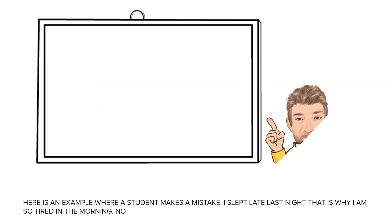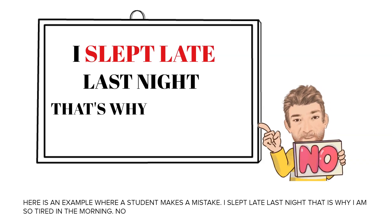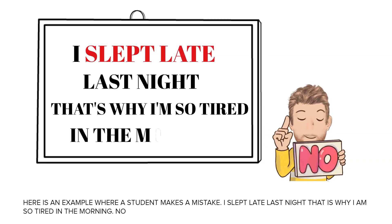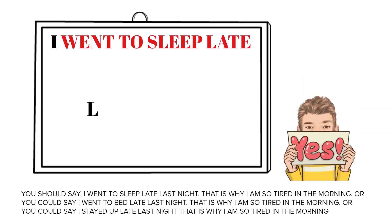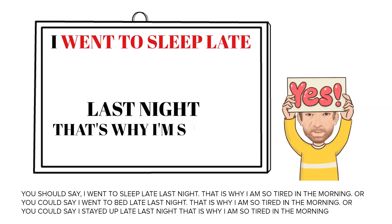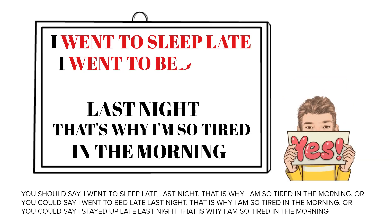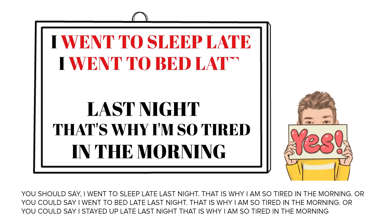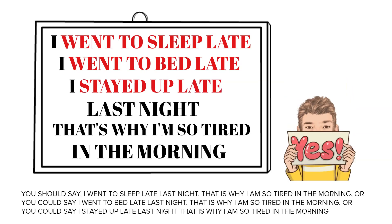Here is an example where a student makes a mistake: 'I slept late last night. That is why I am so tired in the morning.' No — you should say 'I went to sleep late last night. That is why I am so tired in the morning.' Or you could say 'I went to bed late last night. That is why I am so tired in the morning.' Or 'I stayed up late last night. That is why I am so tired in the morning.'